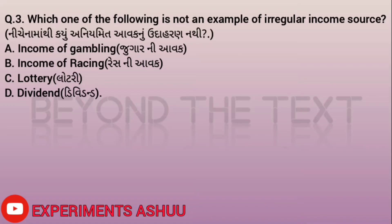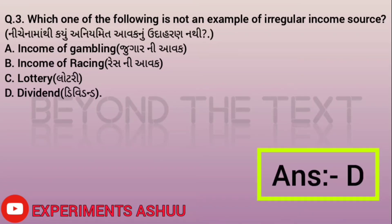Question three: Which one of the following is NOT an example of an irregular income source? Options: A - income from gambling, B - income from racing, C - lottery, D - dividend. Our answer is D, dividend, because income from gambling, income from racing, and lottery are all examples of irregular income sources. Dividend is not an example of irregular income source, so the answer is D.